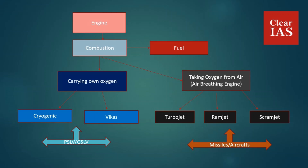In an engine you have two things: oxygen and fuel. For combustion you need both. Fuel you need to carry in any case. For oxygen, there are two possibilities shown in the chart: one is that you carry an oxygen container with you — meaning the oxygen is attached to the flight, missile, or aircraft — and the other possibility is taking oxygen directly from the air.